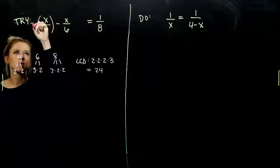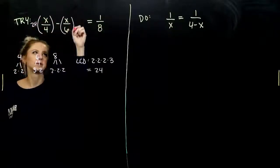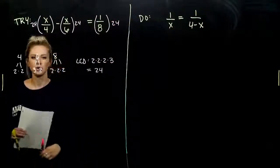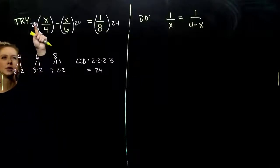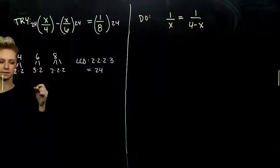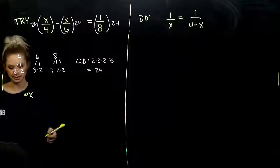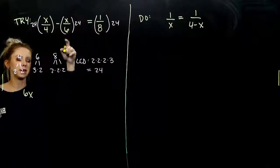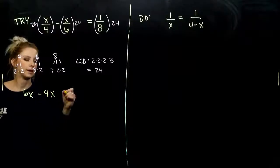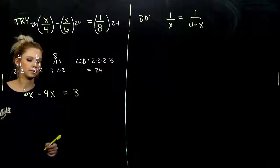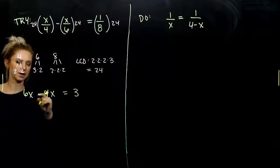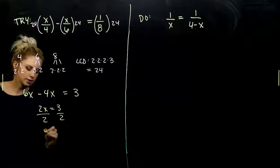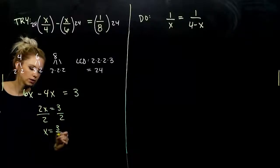Every single term multiplied by 24. So what started to come out here? Again, whole number. 24 divided by 4 gives me 6, 6 times x gives me 6x. Next one, 24 divided by 6 gives me 4. And 24 divided by 8, 3. So when we combine our like terms over here, I have 2 factors of x equal to 3. So what value did you get for x? 3 halves.